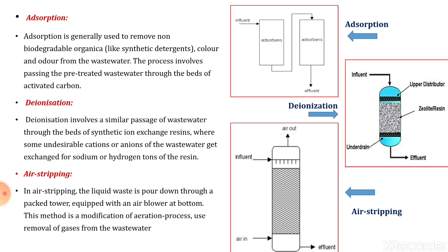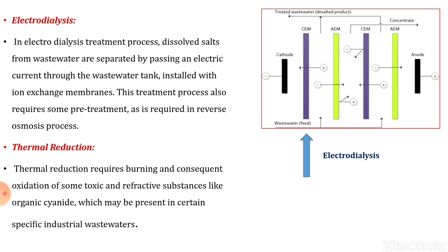In air stripping, the liquid waste is poured down through a packed tower equipped with an air blower at the bottom. This method is a modification of the aeration process and is used for removal of gases from wastewater. The influent comes into contact with air blown from the bottom while the influent enters from the top. Undesirable gases present in the wastewater are released and the clear effluent is taken out from the bottom.